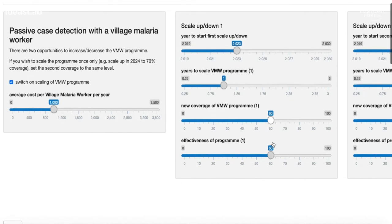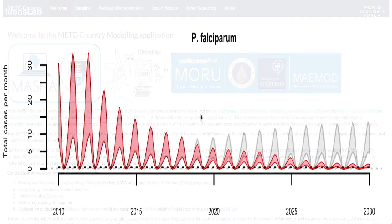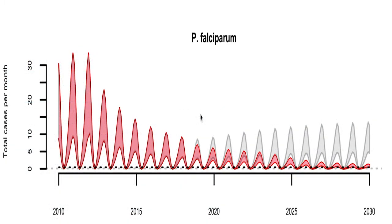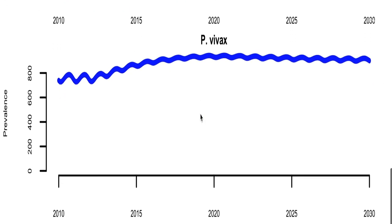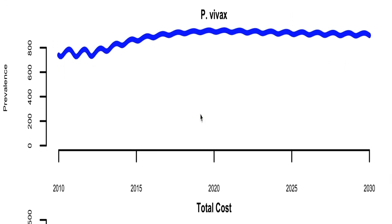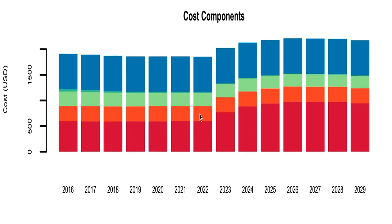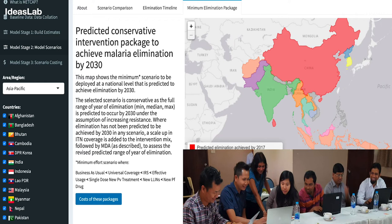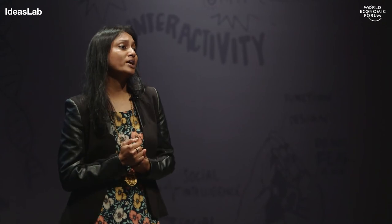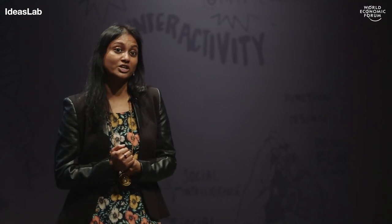This allows us to create outputs such as disease incidence, prevalence, a total cost for budgetary purposes, and even a cost breakdown of the different components of the health system. This can be really useful in helping a country design their national strategic plan or making funding applications. We have created one such application in the Asia Pacific, with the purpose of predicting the path to malaria elimination by 2030. This application has already been influential in shaping policy in the region.